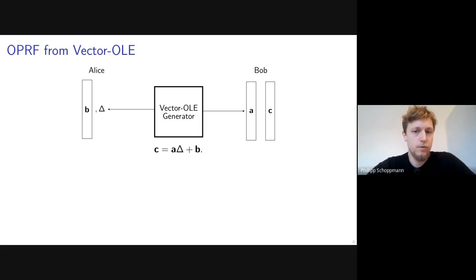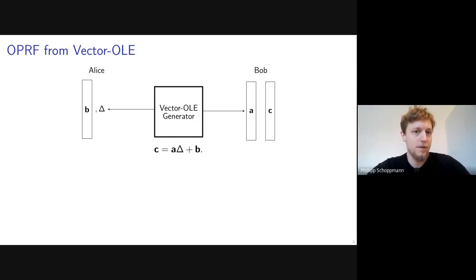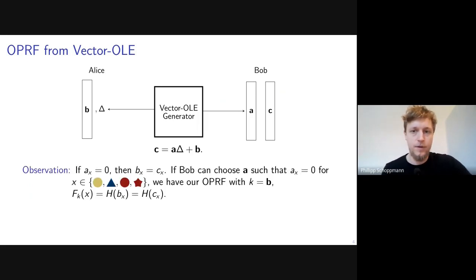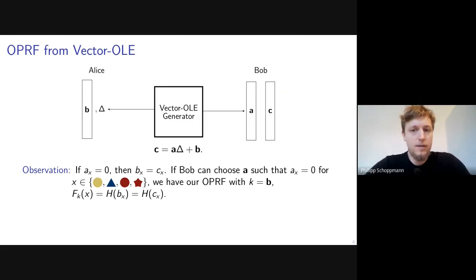How can we get from Vector OLE to an OPRF? Suppose the vectors a, b, and c were exponentially long — having as many elements as there are possible elements in the OPRF domain. If Bob could additionally choose vector a to be zero at certain positions, we could define an OPRF by having Bob set a to zero at positions corresponding to his input elements. At those positions, b and c would be equal regardless of delta, and passing those through a random oracle immediately gives a PRF.